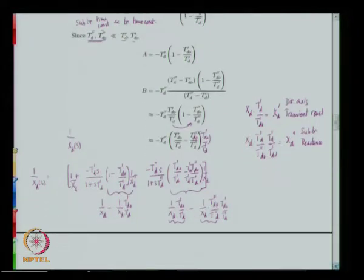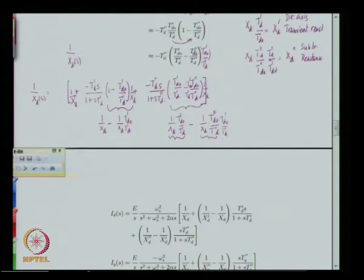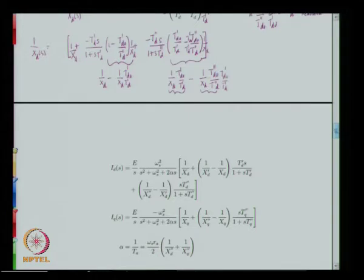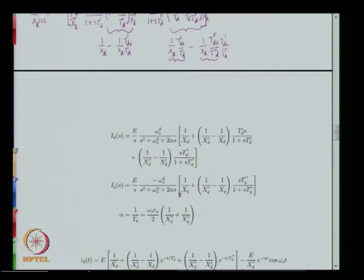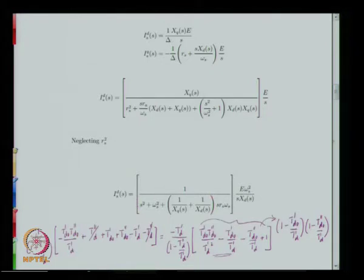So 1/xd(s) simplifies as we see: it is 1/xd plus (1/x'd – 1/xd)·s·T'd/(1 + s·T'd) and a further sub-transient term. Similarly, iq(s) can be written in an analogous form using the same elimination method. Both these expressions come directly from the expressions for id and iq derived from the matrix inversion.